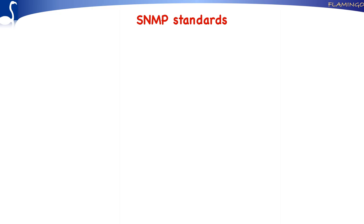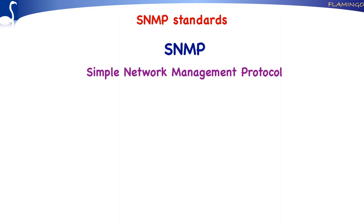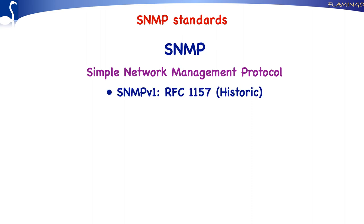The third category of Internet Management Standards define the SNMP, the Simple Network Management Protocol. Like the SMI, there are multiple versions of SNMP defined. The original version was SNMP version 1, defined in RFC 1157. Despite the fact that this version is still widely used in practice, the IETF has declared this version to be historic.